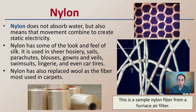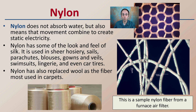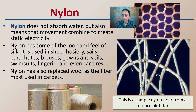Nylon does not absorb water, which means movement can create static electricity, so it may not always be used as a pure garment fiber. It has some of the look and feel of silk, as seen in the shininess of nylon twine. It is used in sheer fabrics, sails, parachutes, gowns, veils, swimsuits, and car tires. It can also replace wool as the fiber used in carpets. A sample of nylon fiber from a furnace air filter shows how the fibers cross over each other and appear woven at the microscopic scale.